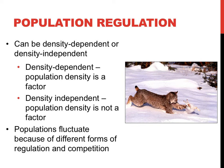Density-independent factors are not related to the number of individuals per unit space. It wouldn't matter if the population size was 10,000 or 100,000 — individuals would be equally susceptible to death. An example of a density-independent form of regulation might be a natural disaster, such as flooding, or especially low seasonal temperatures. This form of regulation usually involves abiotic factors.